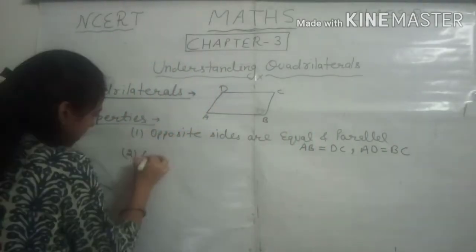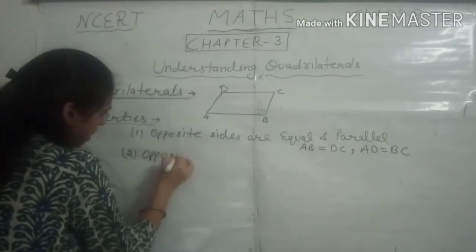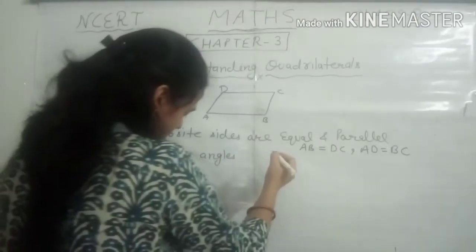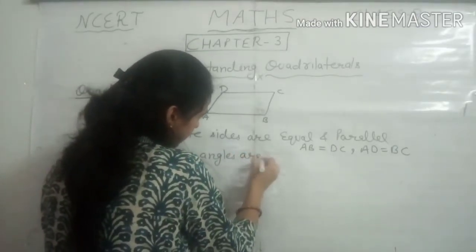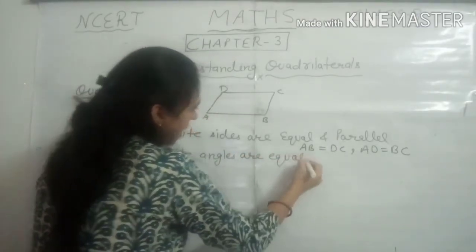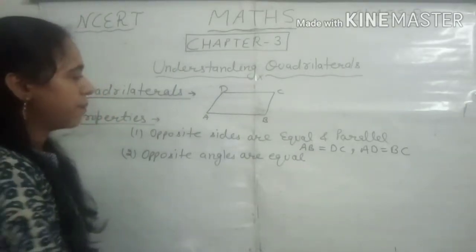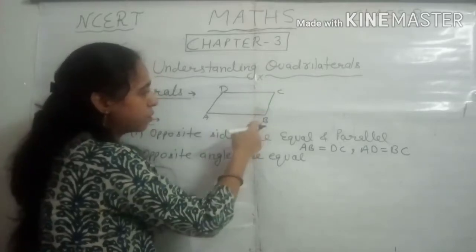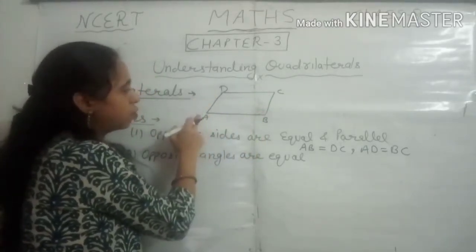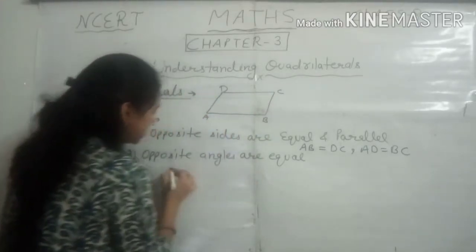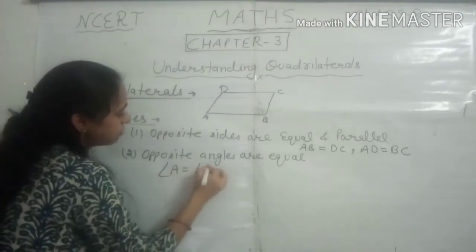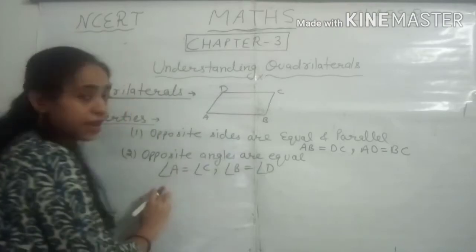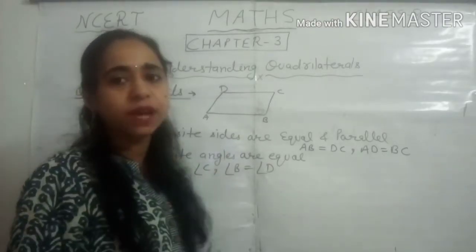Next is about angles. The second property is that opposite angles are equal. For quadrilateral ABCD, angle A is equal to angle C, and angle B is equal to angle D.